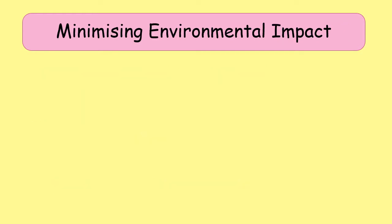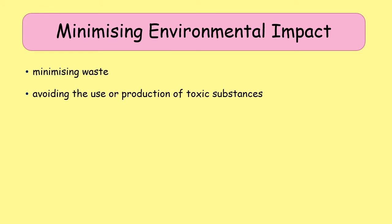In regards to minimizing environmental impact, there are three main things to consider. First, how do you minimize waste? This is where atom economy comes in — if you've got a chemical process that has 100% atom economy, you should have hardly any waste. Second, trying to avoid the use or production of toxic substances, which means careful attention to the chemicals you use and looking at your atom economy to try to minimize the chances of a toxic side product.